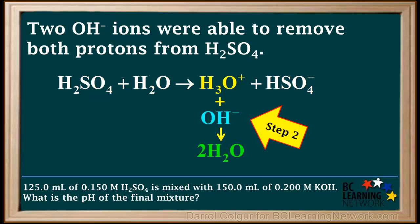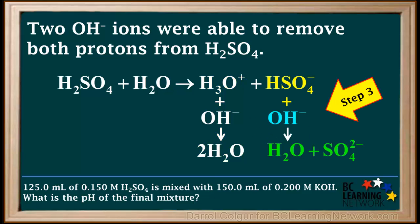When we add a strong base, one OH minus ion neutralizes the hydronium ion to form two water molecules. We'll call this step 2. And the other OH minus reacts with the hydrogen sulfate ion to form water and a sulfate ion. We'll call this step 3.